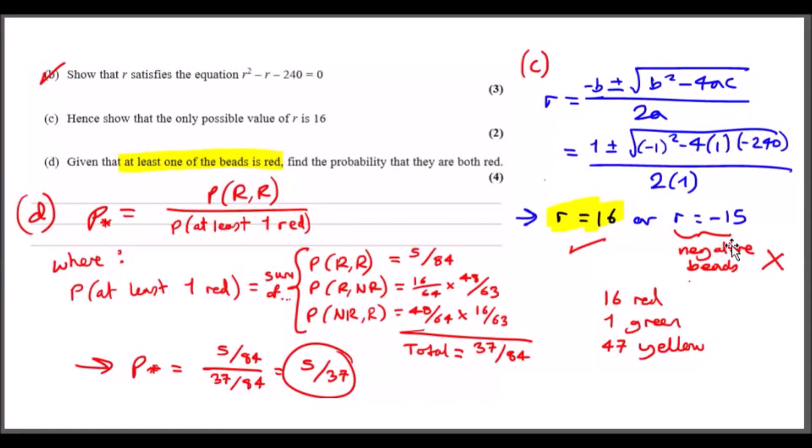Part D: Given that at least one of the beads is red—when they use the word 'given that,' remember that goes on the bottom, and that's always the total area, so we're only concerned about the given that region—then find the probability that they are both red. I just call this Part D. You're going to find the probability that you want to get red-red from the area which is at least one red.